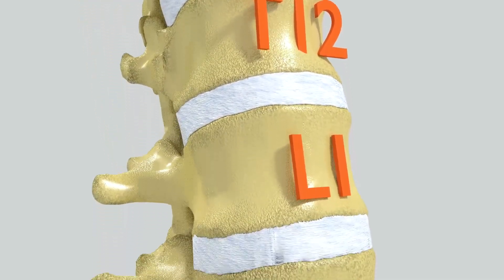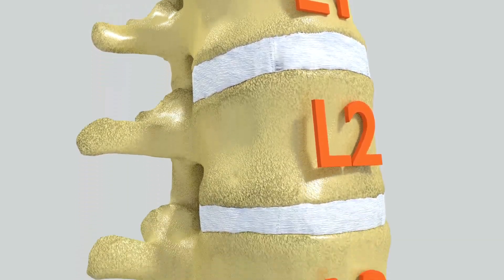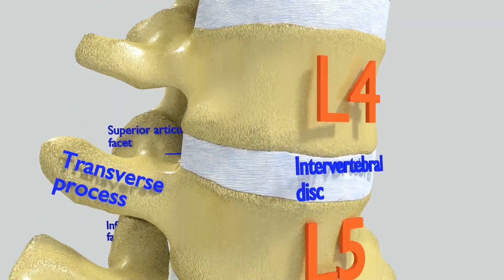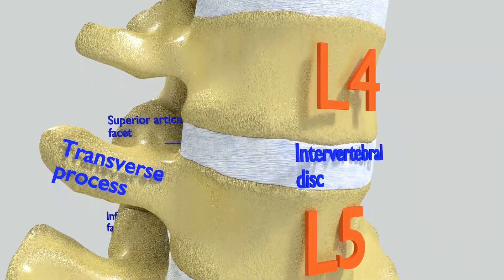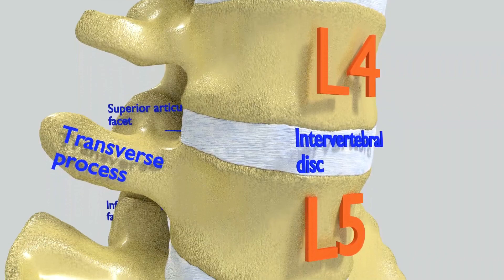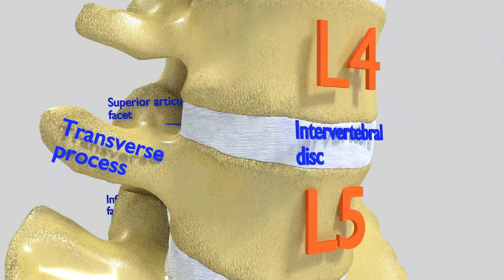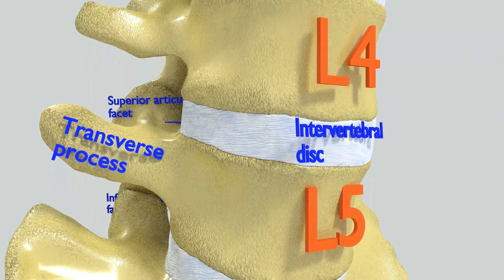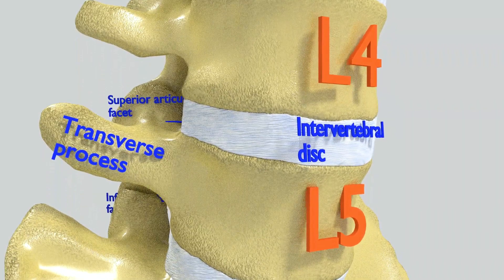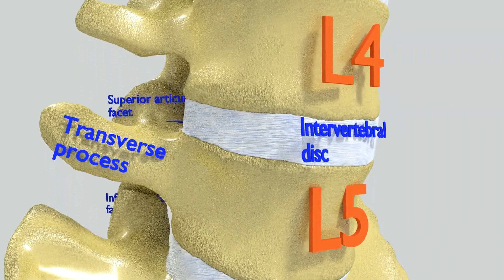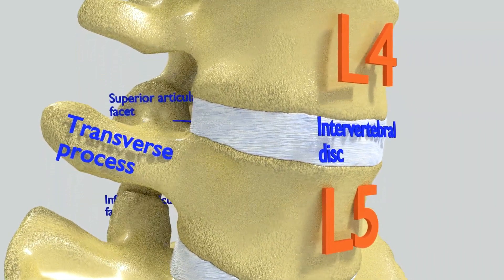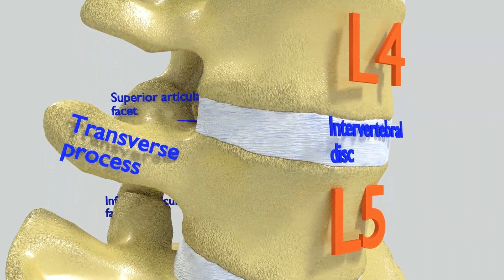In between two sequential vertebrae is an intervertebral disc. An intervertebral disc is the shock-absorbing structure between each vertebra. The disc has an outer layer called the annulus that surrounds the soft gel-like center called the nucleus. With degenerative disc disease, the intervertebral disc shrinks in height and bulges out into the surrounding spinal canal.